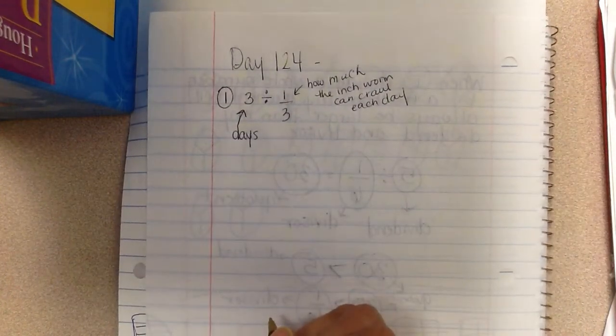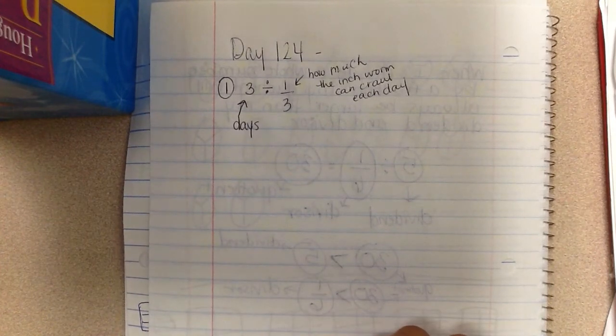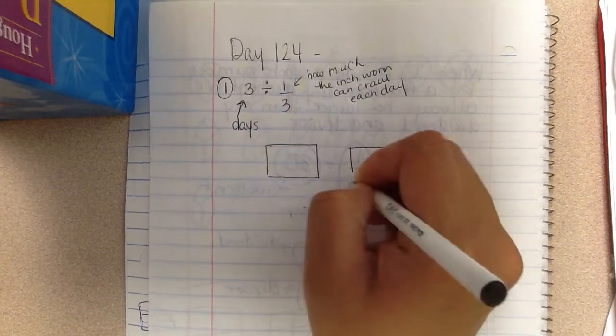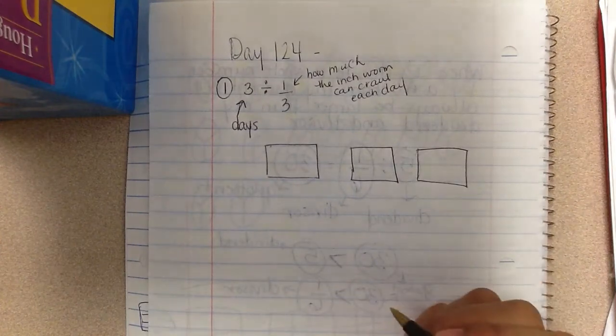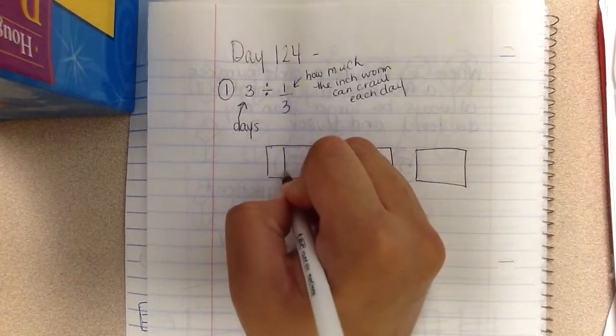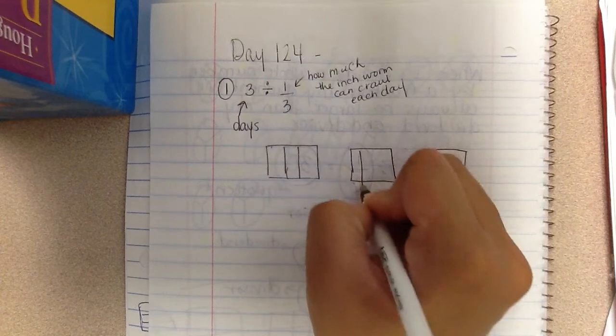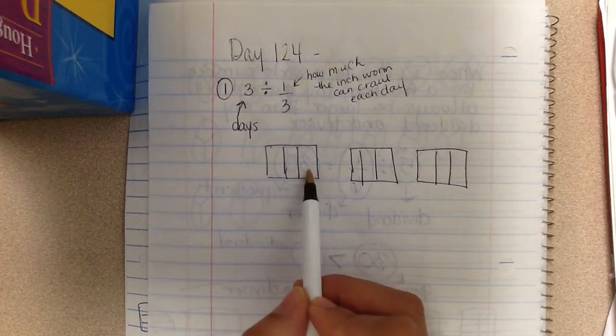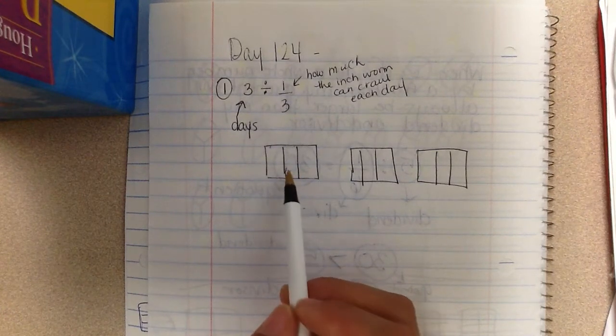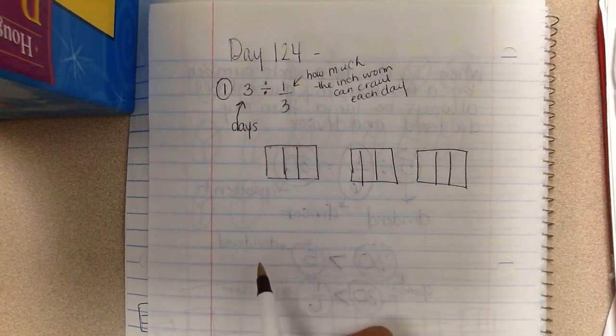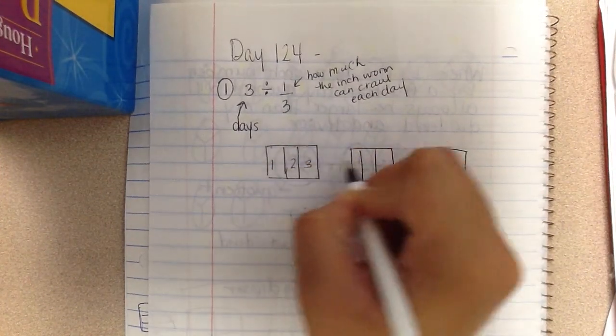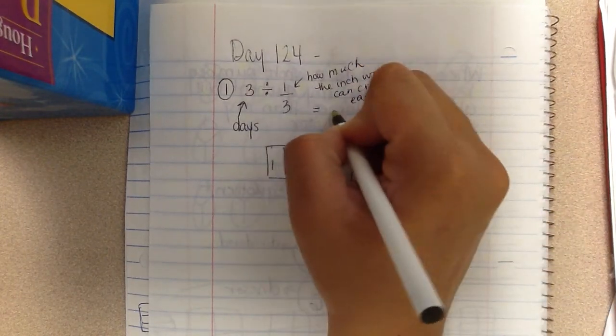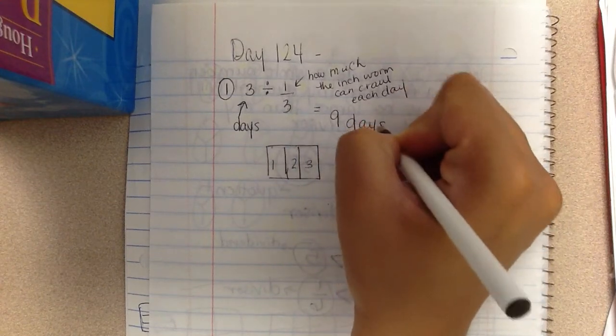If I'm thinking three divided by one third, I'm going to show that using a model. So I'm going to take three squares and I'm going to divide each square into three pieces because I'm dividing into thirds. And then I need to see how many thirds are in all of these boxes. So I have one, two, three, four, five, six, seven, eight, nine. That means it will take the inchworm nine days to crawl three meters.